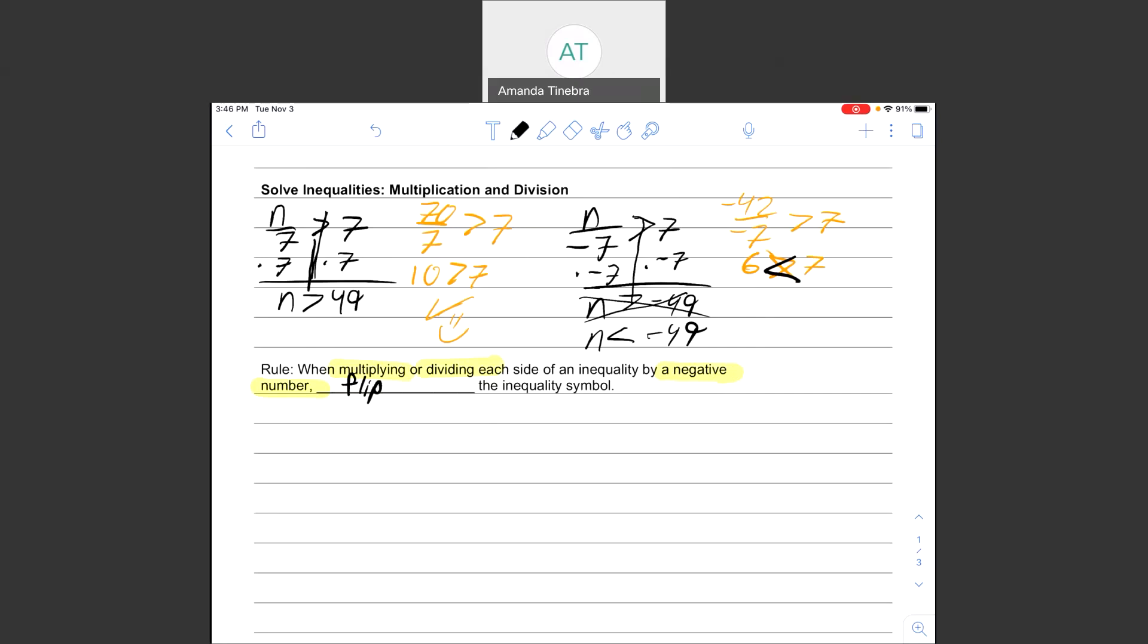So let's say that I had 26 is less than negative 2x. I would draw my line through the equal sign, and I would say, okay.